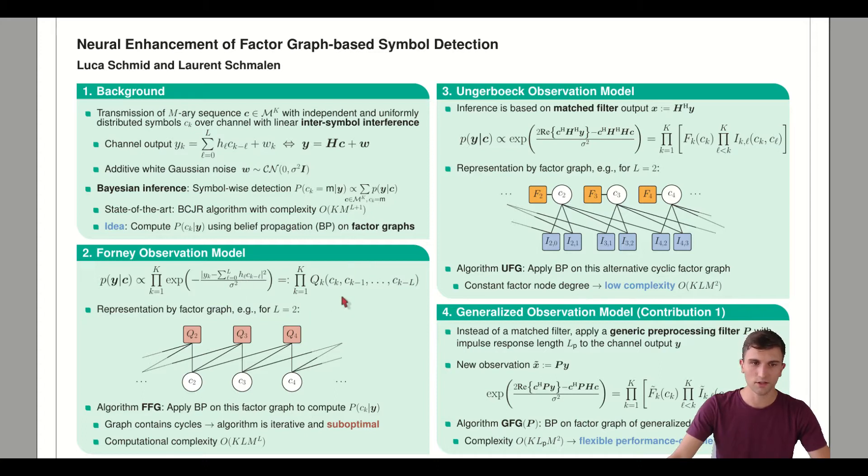This factorization can be represented in a factor graph. The factors Q are given with these factor nodes in red. Each factor node is connected to the variable nodes on which the factor depends. This factor graph can be used to carry out marginalization by applying belief propagation to compute the symbol-wise APP.